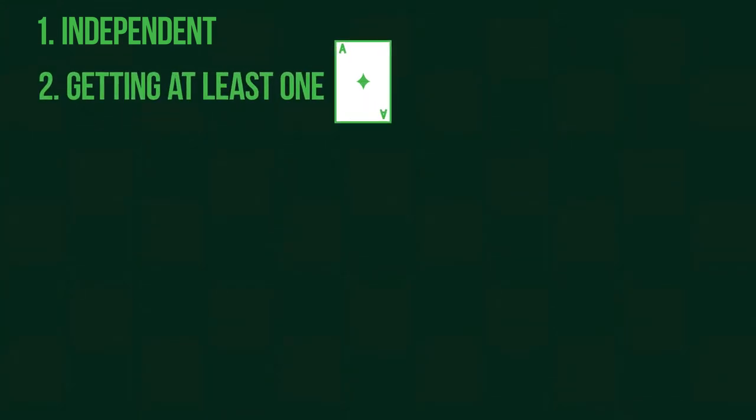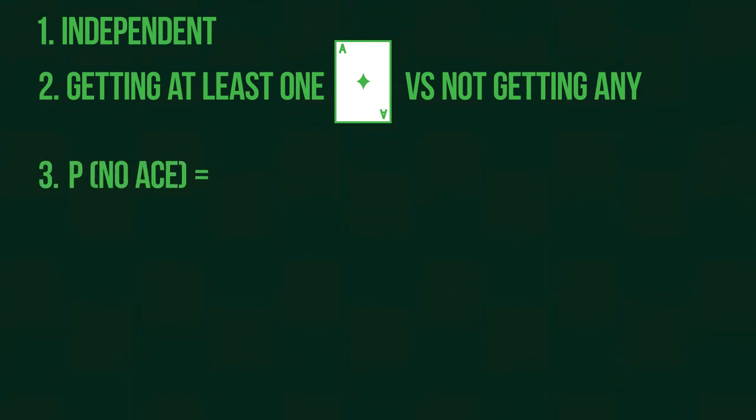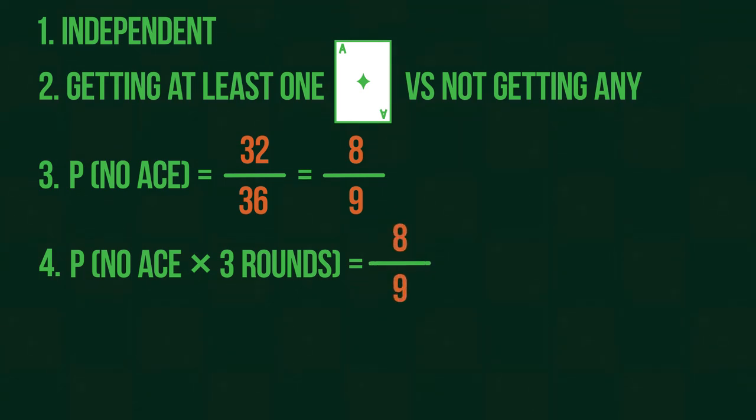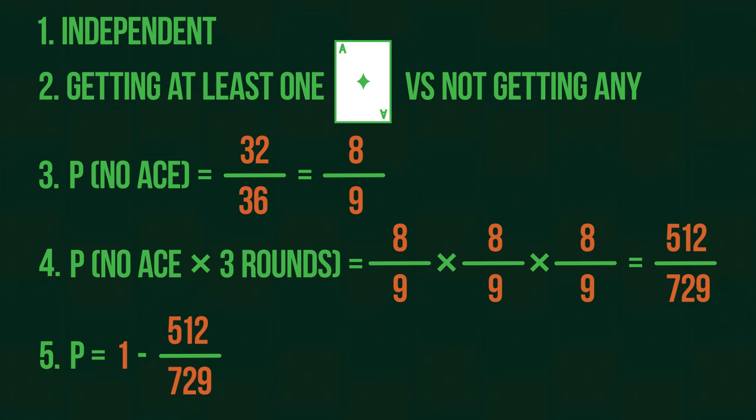If we put the card back, our rounds are independent. Getting at least one ace is the opposite to not getting any. The probability of not getting an ace in any one of the rounds is 8/9. So, the probability of not getting an ace in all three rounds is 8/9 times 8/9 times 8/9, which is 512 over 729. As a result, the probability of getting at least one ace is 217 over 729.